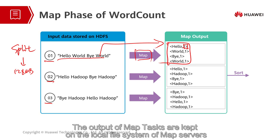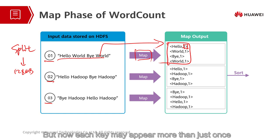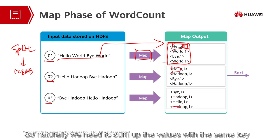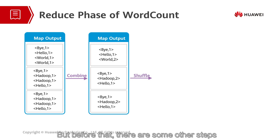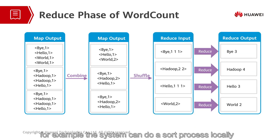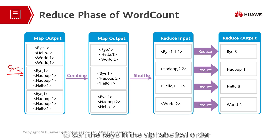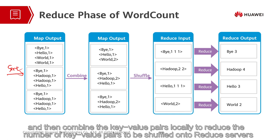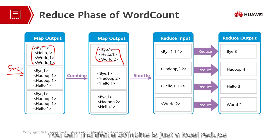The output of map tasks is kept on the local file system of map servers. By now, each key may appear more than once — for example, 'hello' appears many times, but the value is always one. So naturally, we need to sum up the values with the same key. But before that, there are some other steps. For example, the system can do a sort process locally to sort the keys in alphabetical order, and then combine the key-value pairs locally to reduce the number of key-value pairs to be shuffled onto reduce servers. A combine is just a local reduce.